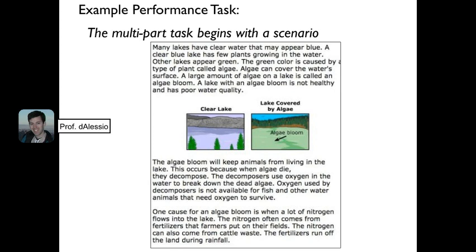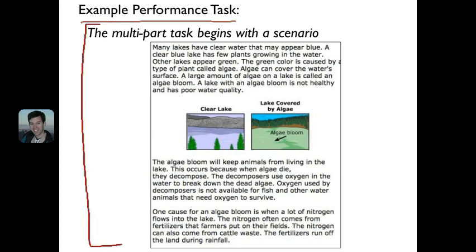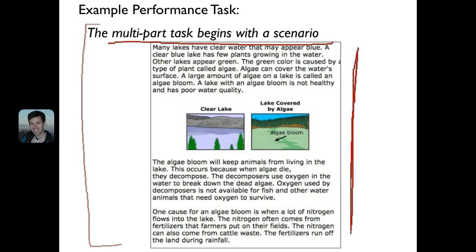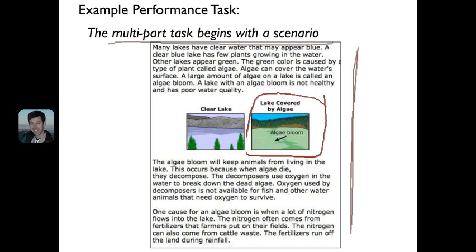The state has released sample performance task examples of what this assessment looks like. This multi-part task begins with a scenario about an algae bloom that turns a lake green — a new situation the test makers expect students will never have seen before. That's the nature of these tests: we give students new and exciting situations and see how well they perform as scientists to think them through.